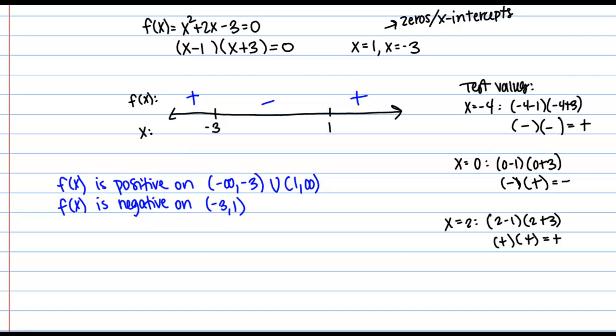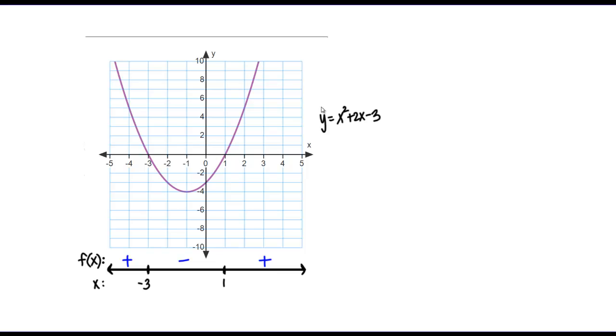And let's just verify this on a graph to make sure we understand what's going on here. So here's my function, y = x² + 2x - 3. And as we expect it's a parabola. And I've lined up my number line underneath here. So we can compare what we got to the graph. So I see that my zeros were correct. I have a 0 at -3 and a 0 at 1. And then my function is positive to the left of -3 here. And then to the right of x = 1. Just like we discovered on our number line. And then my function is negative between -3 and positive 1.